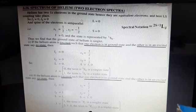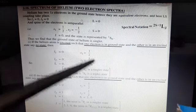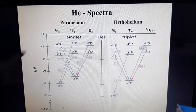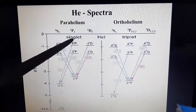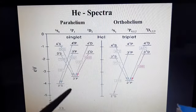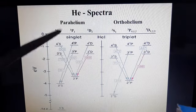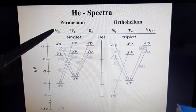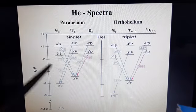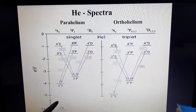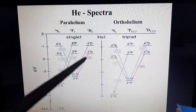We will now draw these spectral notations as energy levels in the next slide. The singlet state is also called parahelium and the triplet state is also called orthohelium. There are two different types of spectra. In parahelium (singlet state), the spectral lines are ¹S₀ for the s substates, ¹P₁ for the p substates, and ¹D₂ for the d substates.